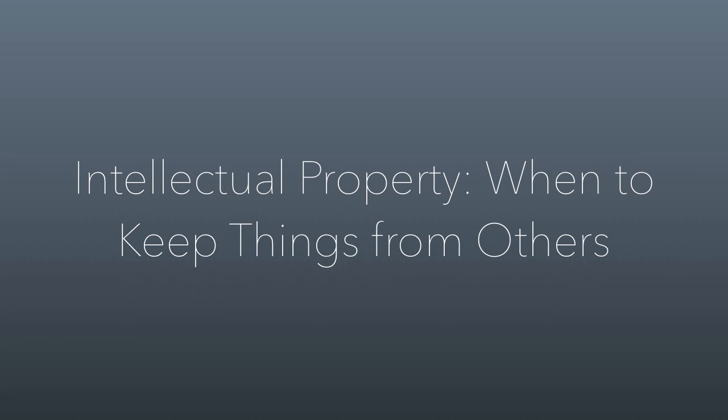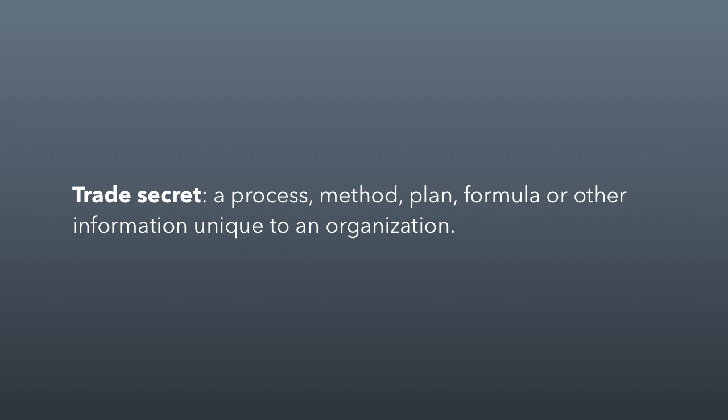Now we're moving on to intellectual property — when you keep things from others, like secrets, or retain the right to use information you've published. There are times nonprofits shouldn't share everything. The first and most important is the trade secret: a process, method, plan, or formula that's unique to an organization that the organization keeps secret. The most famous example is the recipe for Coca-Cola — supposedly only two people in the world know the full recipe. A common nonprofit trade secret is a donor list, which many nonprofits closely guard because it's essentially their source of revenue.